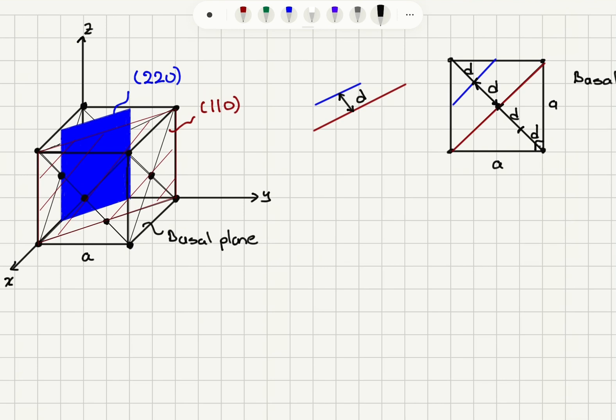And 110 plane is the plane that's parallel to it, that intersects the xy-axis at one lattice constant, and running parallel to the z-axis. So, you can see that what I'm trying to find here is the distance between this 220 and 110 plane, because those are the nearest 220 planes.